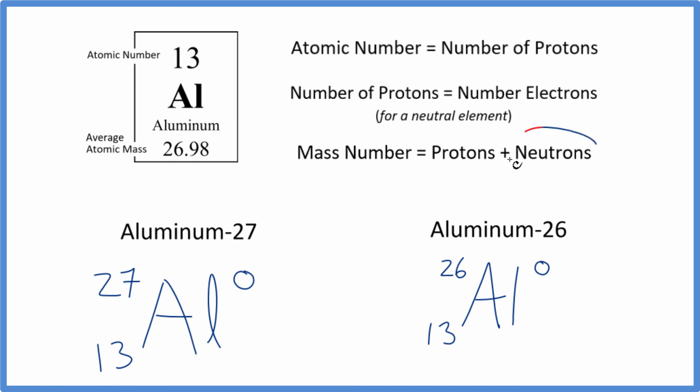Note that we don't need to write anything about neutrons because you can just figure them out. If the mass number is 26 and you have 13 protons, then you have to have 13 neutrons for aluminum 26. Likewise, you could figure out the number of neutrons for aluminum 27 the same way.